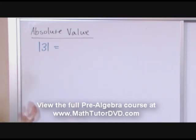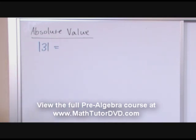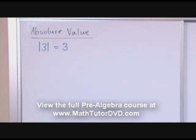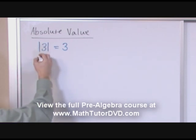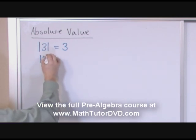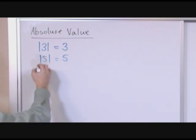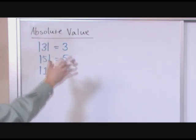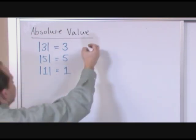The absolute value of a number three, which is an everyday number you've dealt with all your life, is just the number three. I'm gonna give you a few examples, and then we're gonna wrap it up with a general observation. The absolute value of the number five is just the number five. The absolute value of the number one is just the number one. So you see, it's not a hard concept, just like I was telling you, and I'm gonna get into some words and what absolute value is in a second, but let me show you a little something interesting.